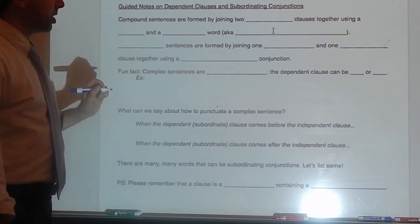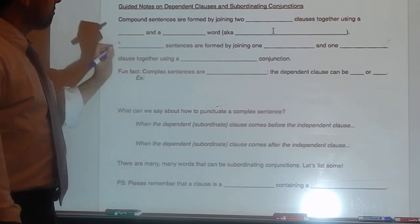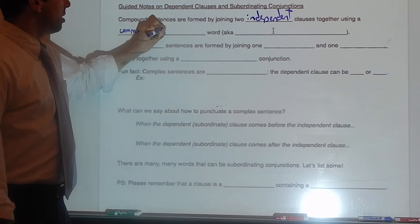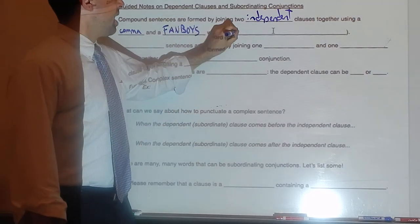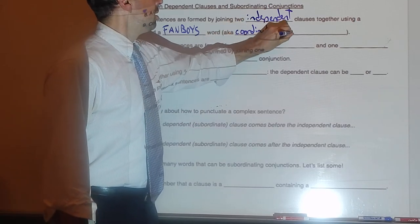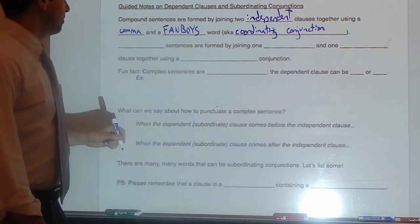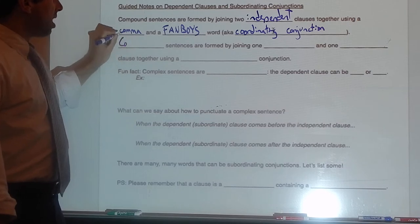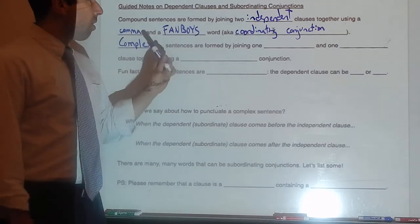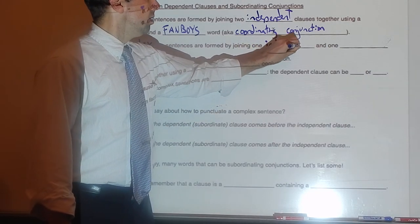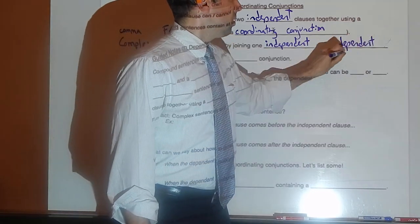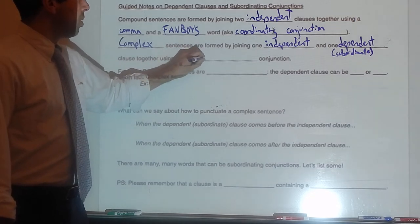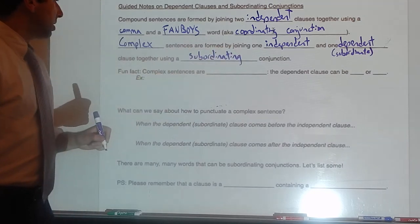Here are the guided notes on dependent clauses and subordinating conjunctions. Compound sentences are formed by joining two independent clauses together using a comma and a FANBOYS word, also known as a coordinating conjunction. Complex sentences are formed by joining one independent and one dependent or subordinate clause together using a subordinating conjunction.